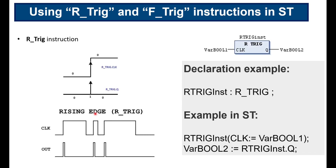First I'll explain the concept behind these two instructions. R_TRIG, the rising edge detection instruction, receives one input — the input signal is provided on the right side — and provides one output denoted by Q. Whenever there is a rising edge at the input side, we will have a pulse generated at the output, and that pulse will be quite short — it will be for one cycle only. The input changes from zero to one, we have a rising edge, and therefore we have one short pulse.